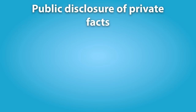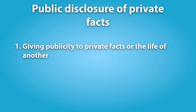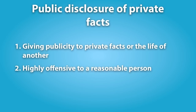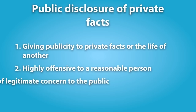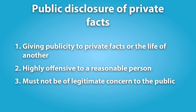The final common law privacy tort is the public disclosure of private facts. This tort has three elements. One, giving publicity to the private facts of the life of another — if the information is publicly known, there is no cause of action, no matter how private or embarrassing. Two, the information must be highly offensive to a reasonable person; something that is simply embarrassing will not satisfy this element. And finally, the information disclosed must not be of legitimate concern to the public — this is what protects TV talk shows like Dr. Phil and various tabloid celebrity stories.